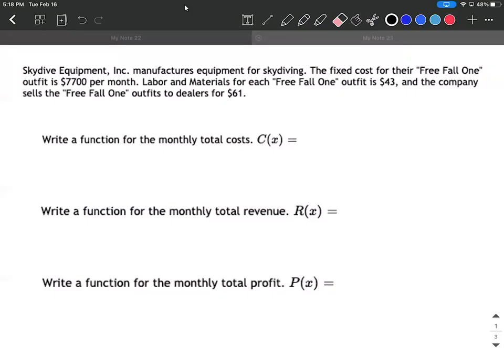In this problem, we're given some information about Skydive Equipment Incorporated, this company that's manufacturing equipment for skydiving. We're given some information about them and their company, and we want to come up with the cost function, the revenue function, and the profit function.